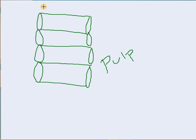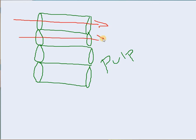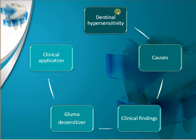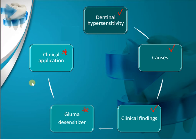If cementum is removed — for example, from using an abrasive substance or scrubbing with an improper technique while brushing — the tubules are now open, resulting in patient sensitivity. Reviewing what we covered today, we looked at dental hypersensitivity, one of its most common causes, how it presents clinically, and why the patient experiences pain. In our next discussion, we'll look at the management of dental hypersensitivity and focus on the use and clinical application of GLUMA.